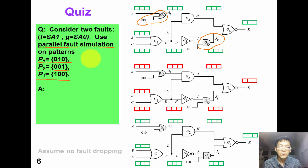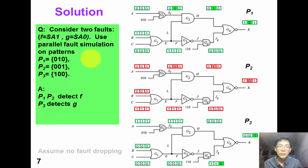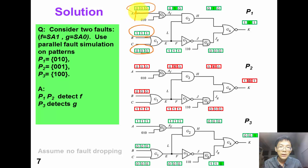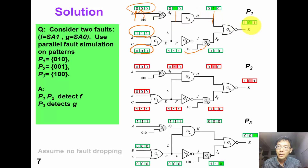The answers are shown on the slide. For the first pattern 0-1-0, the first bit represents the good circuit, the second bit represents fault F, and the third bit represents fault G. In the first pattern, we can see that this bit is flipped, so P1 detects fault F. Similarly, in P2, we can detect fault F. In the third pattern, we can detect fault G.